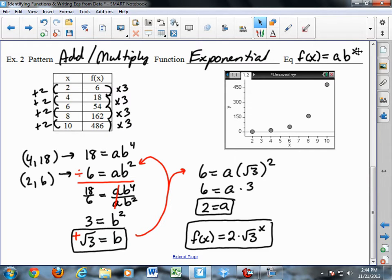Because the x is an exponent here, and it's always helpful to have the higher degree exponent on top when I'm dividing, I'm going to put the second point first. So plugging in 18 for y and 4 for x, I get 18 equals a b to the 4th, and then for the point (2, 6), 6 equals a b squared.